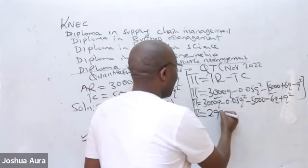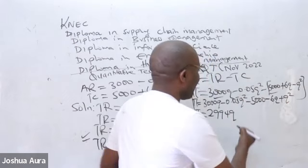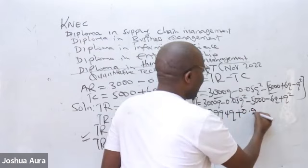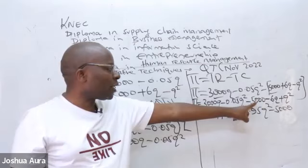And then of course, we have this plus this, minus 0.05 plus 1. That will be plus 0.95Q squared, minus 5,000 like that, because this 5,000 does not have a like term.